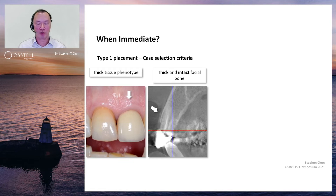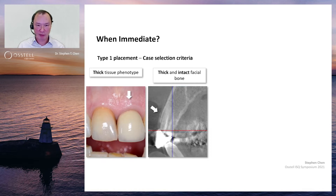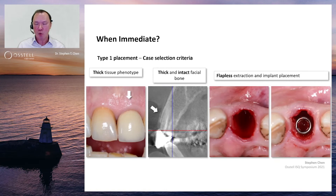The ITI case selection criteria are straightforward. If we adopt these inclusion criteria, we can place implants with a high degree of certainty of successful outcomes. We want a thick tissue phenotype, a thick and intact facial bone plate, and ideally a flapless extraction and implant placement protocol, as this further minimizes trauma to the facial bone.